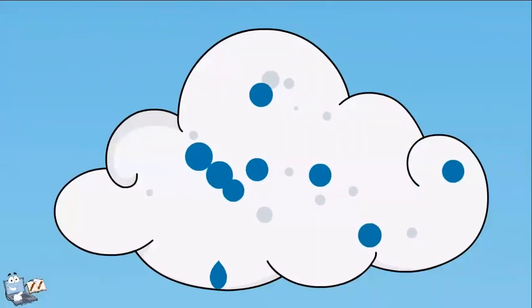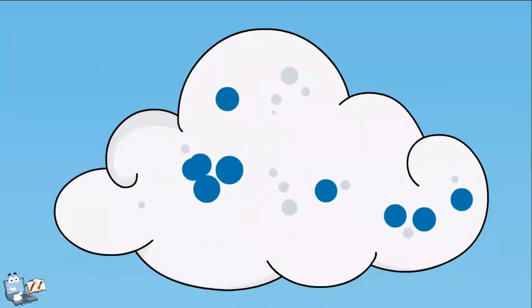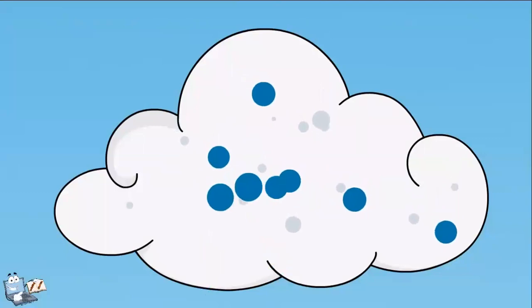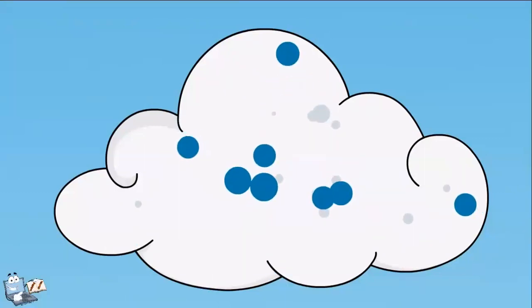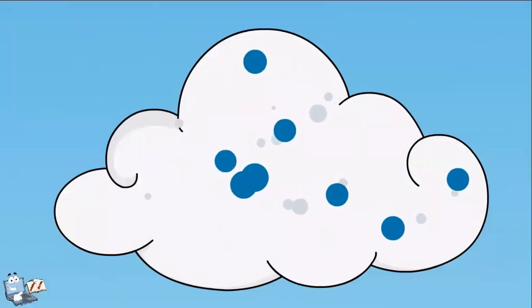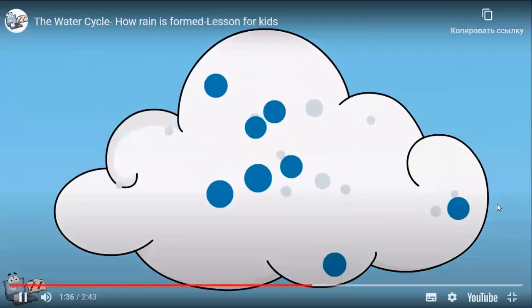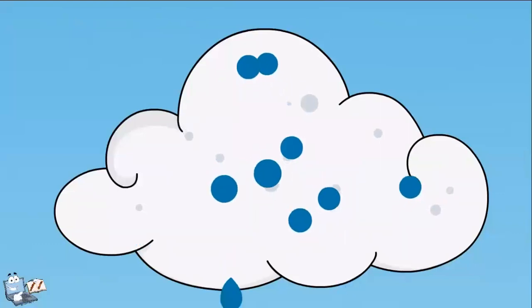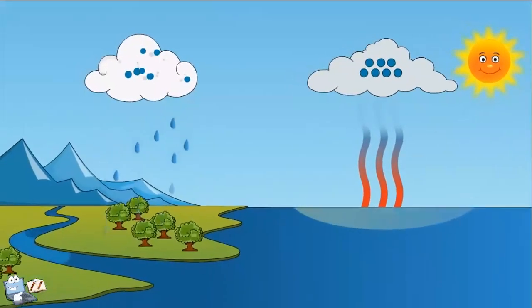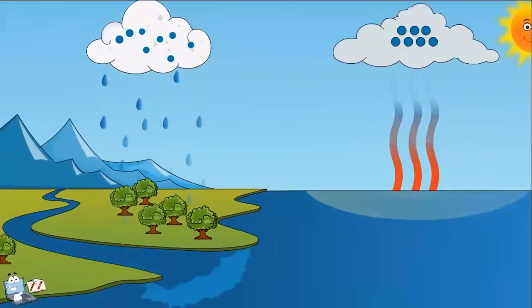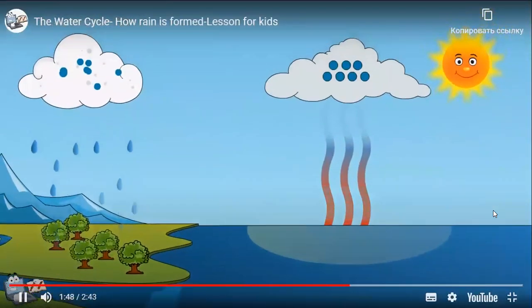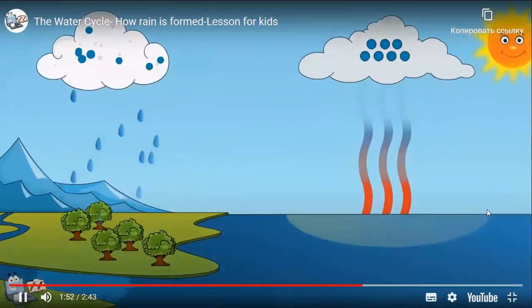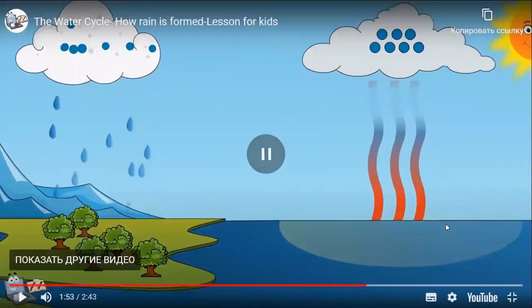When the drops get heavy, they fall because of gravity. They even grow and bump into one another on their journey from the cloud to the ground. Every single raindrop that reaches the ground is made of one million of the original tiny water droplets. Raindrops fall on the ground surface, the sun shines on them, and the whole process happens again. This whole process is called a water cycle, and it keeps the water moving from the ground to the sky.